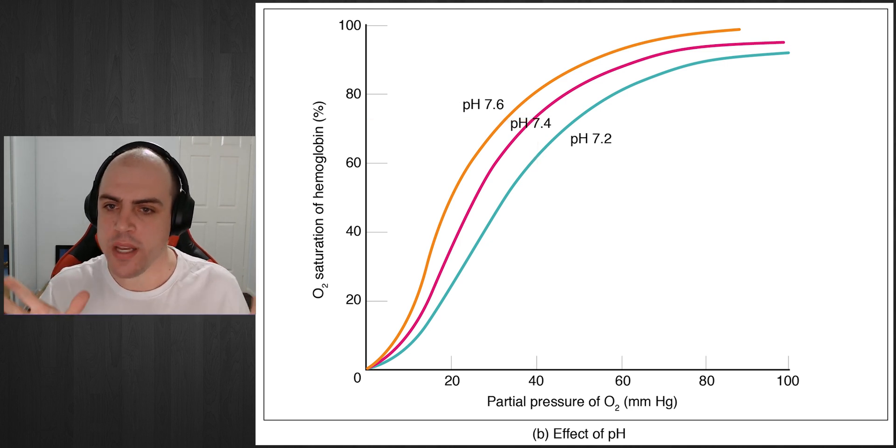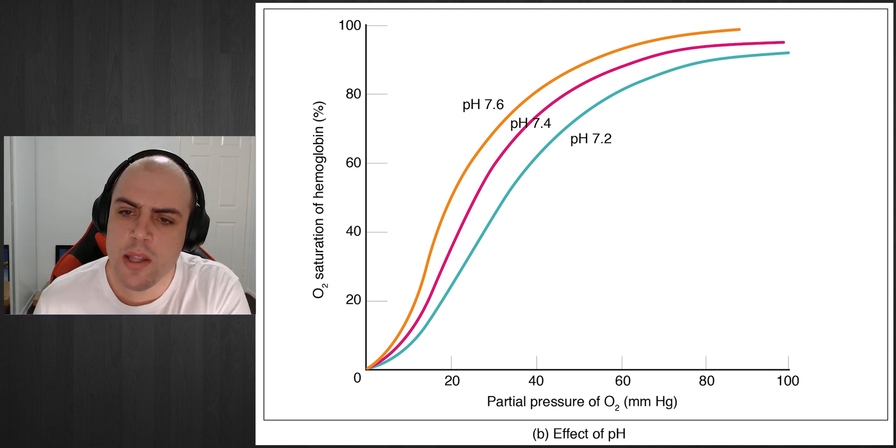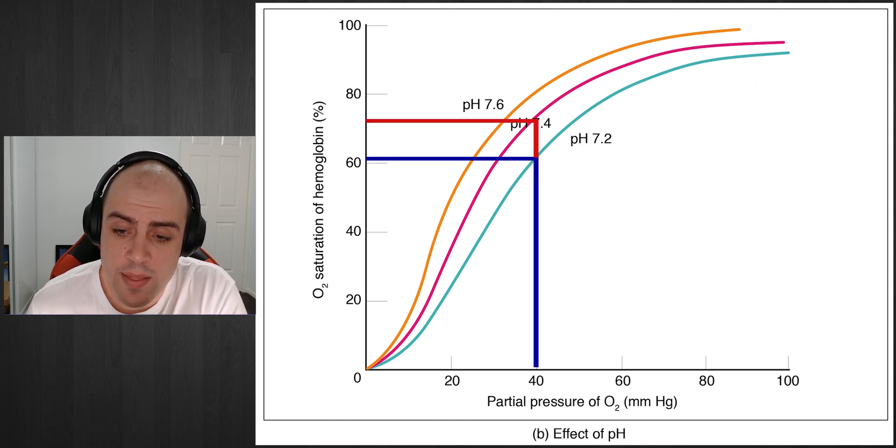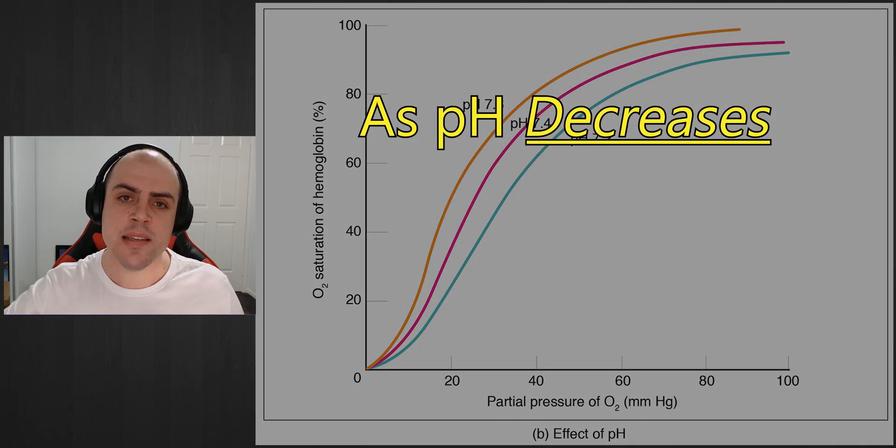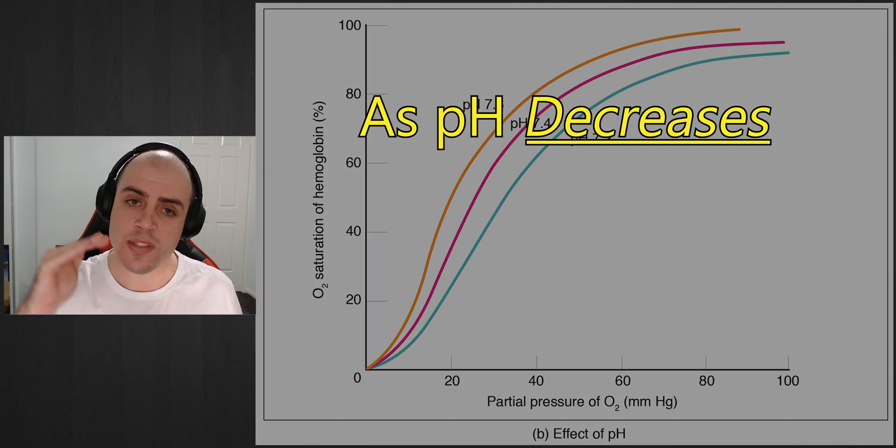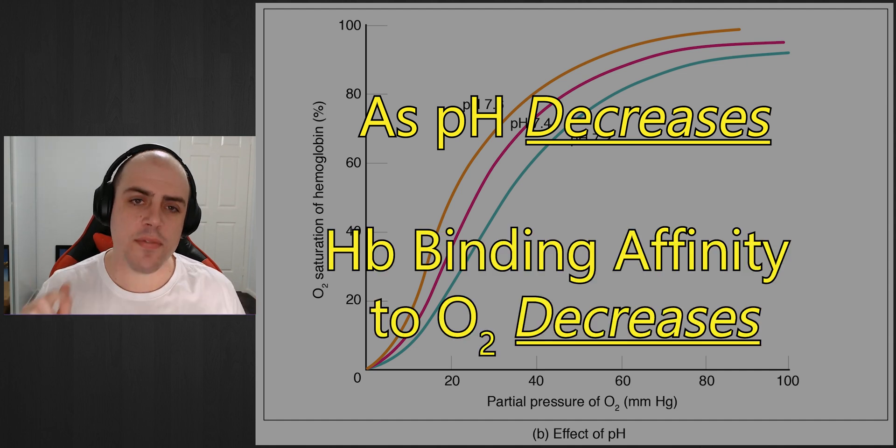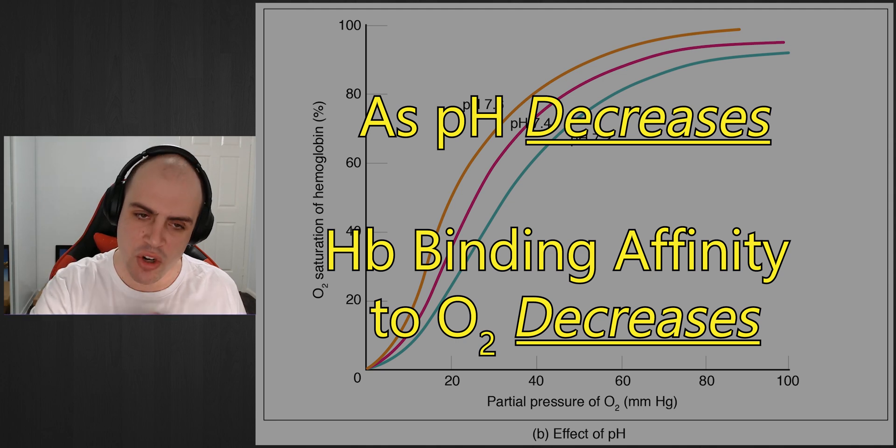Now what happens if we tweak that pH? What happens if we get more acidic? Well, if we look at this graph at pH 7.2, if we compare the same oxygen concentration, we can see around or less than 60 percent. So what this is essentially showing us is that as the pH goes down or as we are getting more acidic, the binding affinity of oxygen to hemoglobin will decrease.